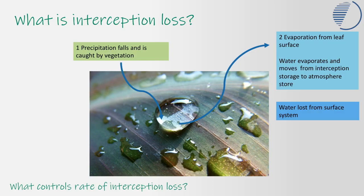Interception loss is the process by which a droplet of water that has landed on a leaf goes back into the atmosphere via evaporation. This is controlled by temperature — higher temperatures mean more evaporation. It's also controlled by wind speed — higher wind speed means more evaporation and more loss of water from the interception store. Thirdly, it's controlled by humidity, because in conditions of high humidity the evaporation rate is lower.